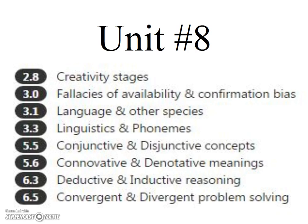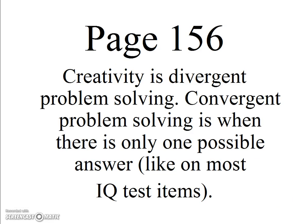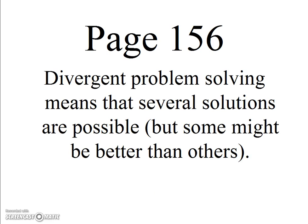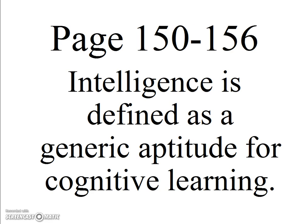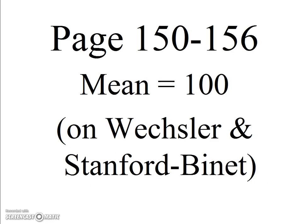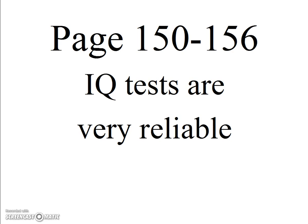In Unit 8, students want to know more about convergent and divergent problem solving. Creativity is divergent problem solving. Convergent problem solving is when there is only one possible answer, like on most IQ tests. Divergent problem solving means that several solutions are possible. What I think is most important in Unit 8 is intelligence and intelligence testing. Intelligence is defined as a generic aptitude for cognitive learning. Tests for intelligence, like Wechsler and Stanford-Binet, have a mean of 100. IQ tests such as these are very reliable, but not necessarily valid.